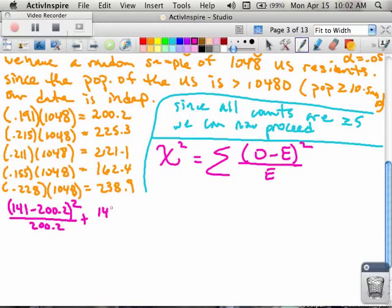141 from the table minus 200.2 from my first line in the orange, squared divided by 200.2. Plus I'm going to have 141 minus 200. So this is wrong because I already wrote that one down. Sorry, distraction. So the next one is 186, which was from the table, minus 225.3 squared divided by 225.3.